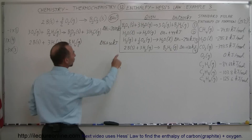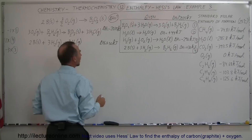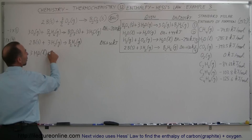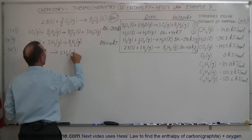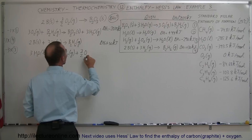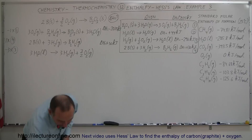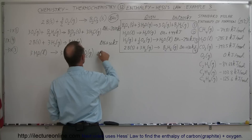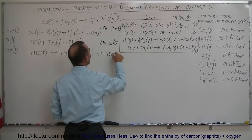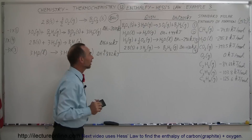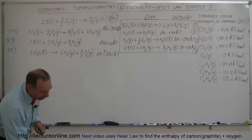When I do that, the products become reactants: three moles of water in the liquid state react to form three moles of hydrogen gas plus three times one and a half — which is three and a half moles — of oxygen gas. Since we turned this around and scaled by three, the delta H becomes positive 882 kilojoules.